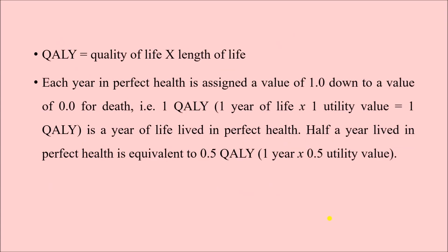The simplest mathematical formula for QALY is: quality of life multiplied by length of life. We are considering both quality and quantity of life. Each year in perfect health is assigned a value of one. If the person dies, the value is zero — that is the worst quality of life. For different disabilities, the value will be between one and zero, for example 0.5 or 0.73. Length of life refers to how many years of life are extended by the particular medical intervention.